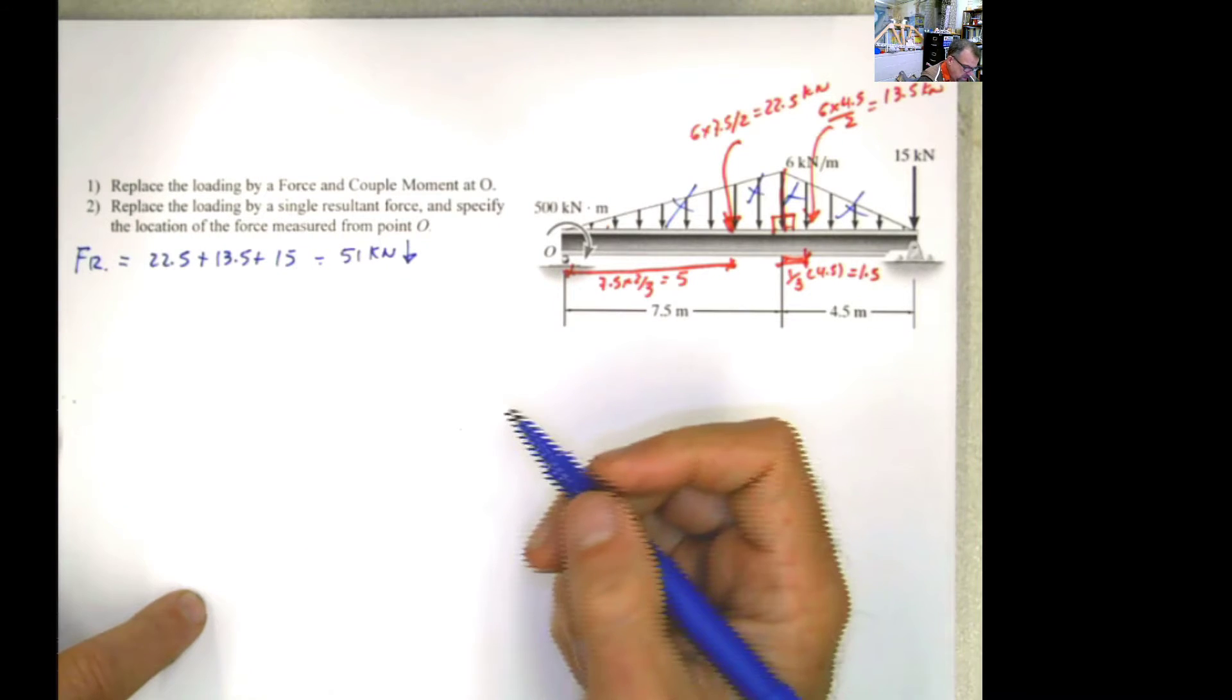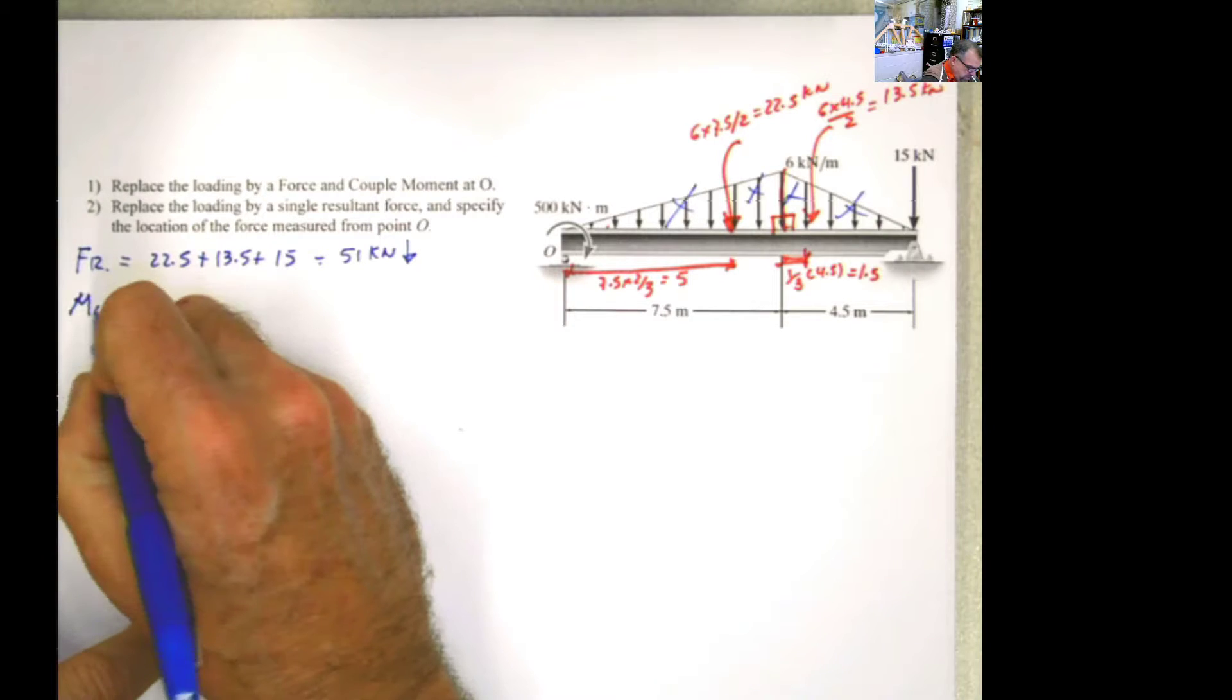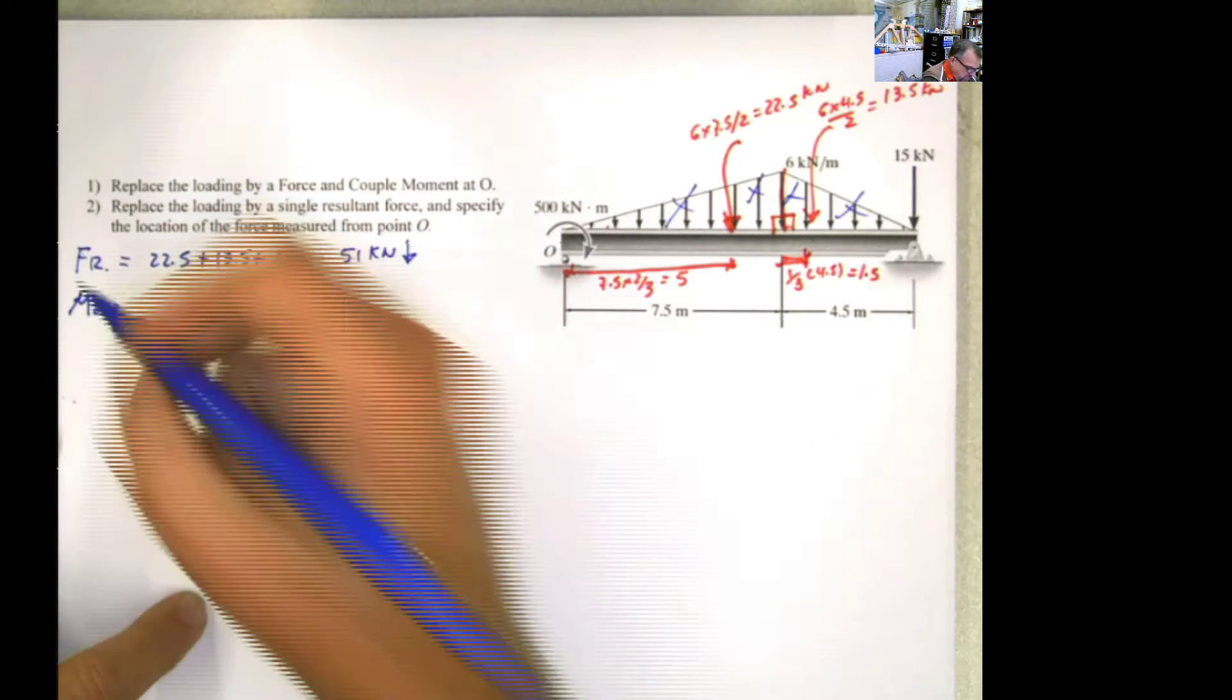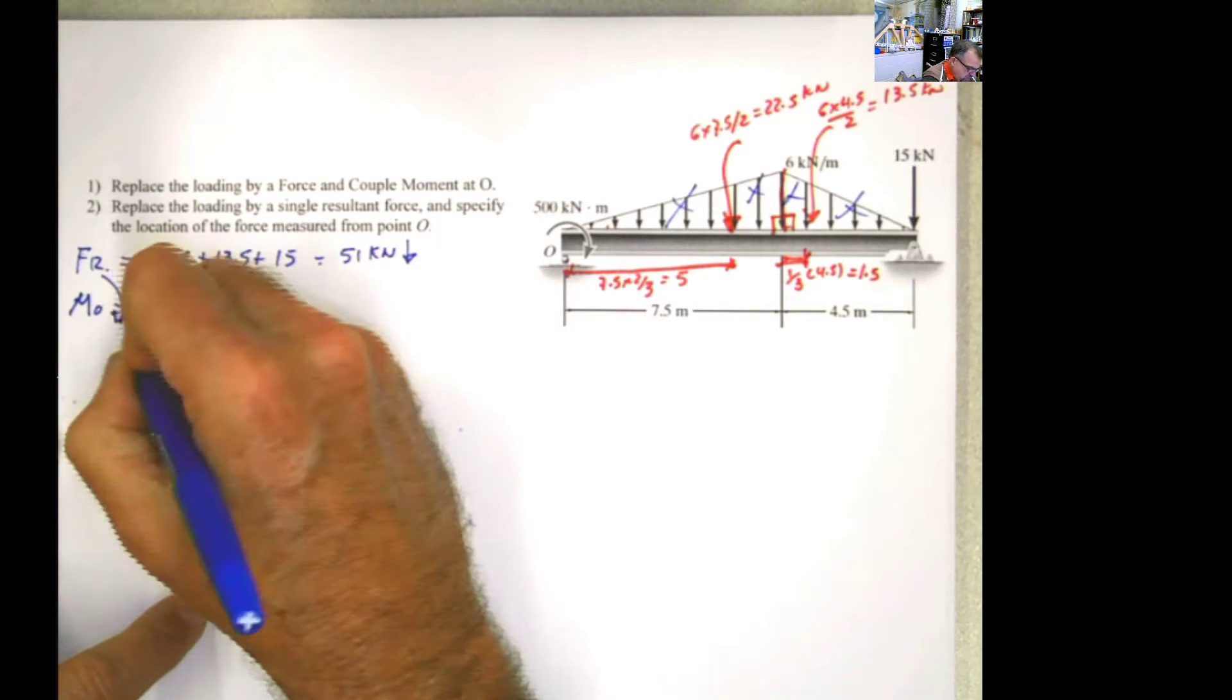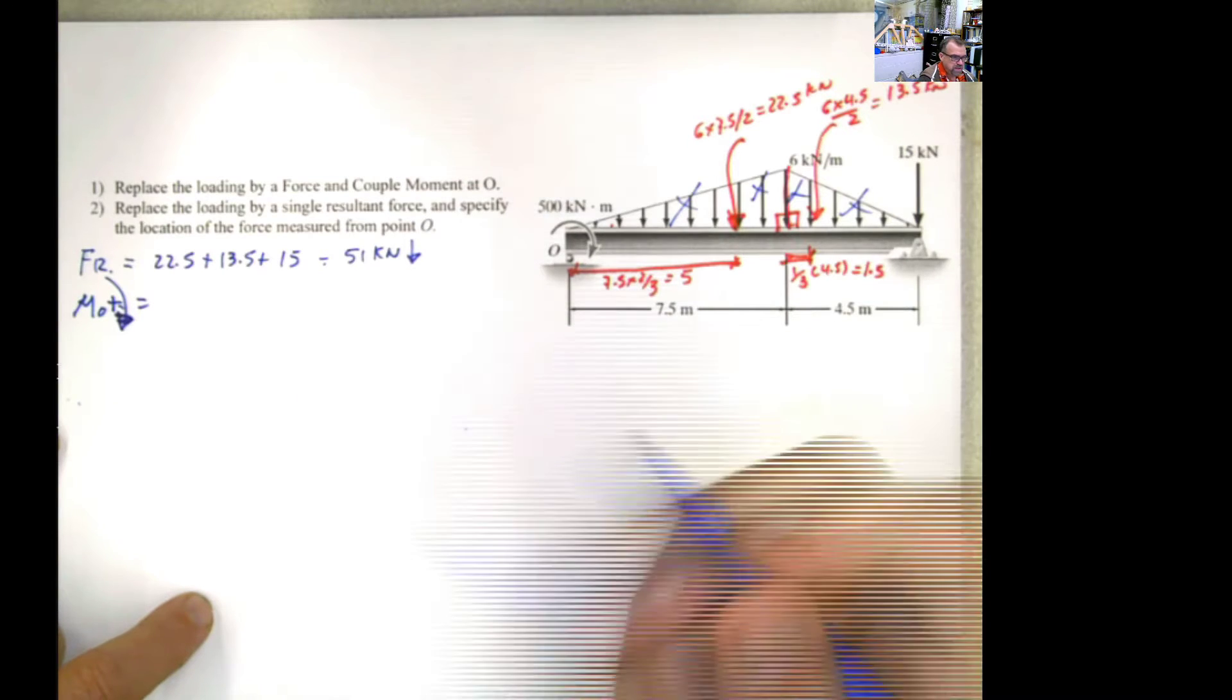The second one is I need the moment with respect to point O. So the moment with respect to point O of all the forces, let's say that I'm assuming this as positive. Because remember, at the end, when you are working with 2D, the only thing that matters is if it's clockwise or counterclockwise.